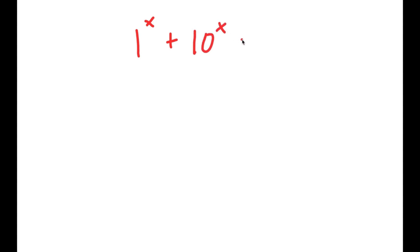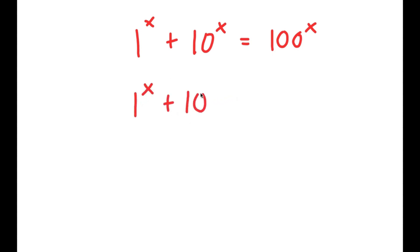In this video, I'm going to solve the equation 1 to the power of x plus 10 to the power of x is equal to 100 to the power of x. To solve this, I'm going to start by rewriting this as 1 to the power of x plus 10 to the power of x is equal to 10 squared to the power of x.